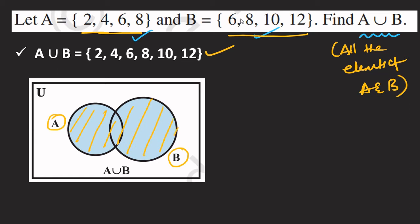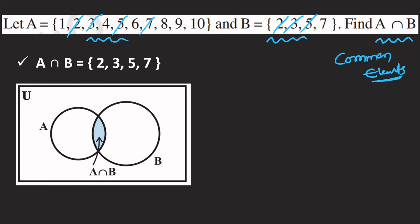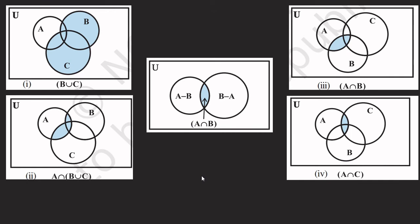A intersection B means the common elements of A and B. Going through A and B: the common elements are {2, 3, 5, 7}. In the Venn diagram, only the overlapping middle part is shaded — that is the intersection region only.